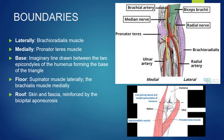First of all, laterally it is bounded by the brachioradialis muscle — here is the lateral boundary where the brachioradialis muscle is present. Medially you can see the pronator teres, which is present on the medial side.